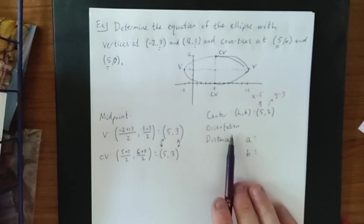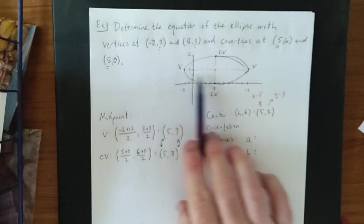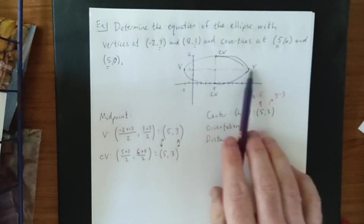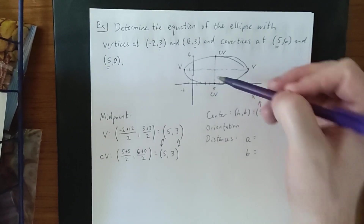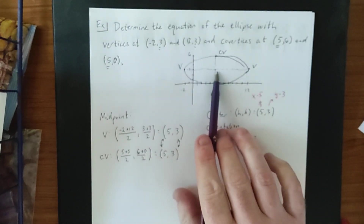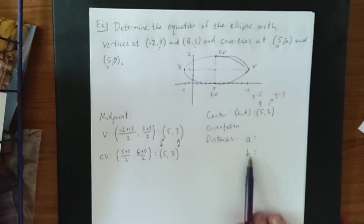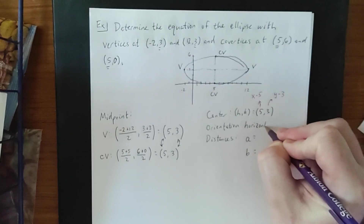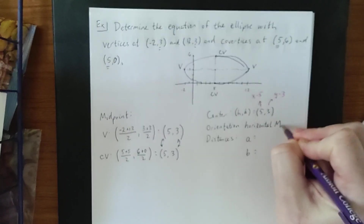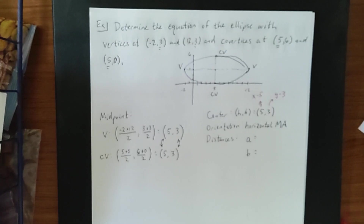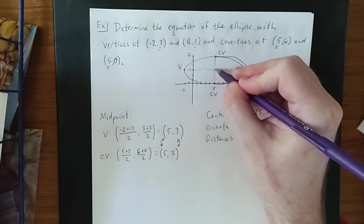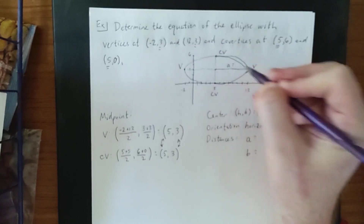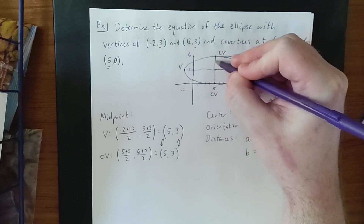As far as orientation is concerned, there are only two kinds of ellipses: horizontal major axis or vertical major axis. In this case, the horizontal axis is considerably longer than the vertical axis, so the orientation is a horizontal major axis. This means a is the distance from the center to a vertex, and b is the distance from the center to a co-vertex.